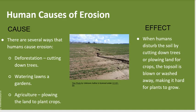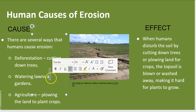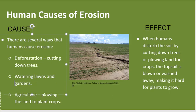There are also human causes of erosion. There are several ways that humans can cause erosion. One way is deforestation — that means cutting down trees. Another way humans cause erosion is by watering lawns and gardens; the water carries soil away. A third way is agriculture — when you plow land to plant crops, that also causes erosion.